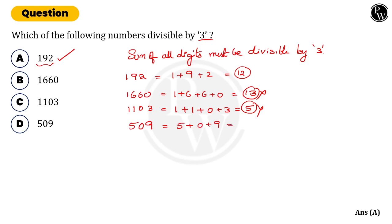So 14 is also not divisible by 3. There is only one number, 192, which is divisible by 3. Option A is the right answer. Thank you.